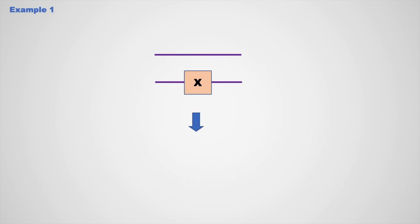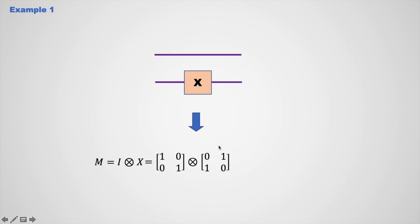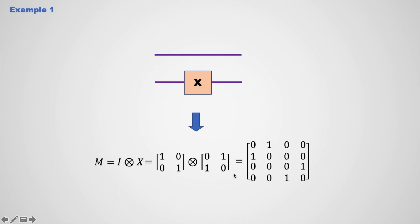Here you can see a quantum wire and, in parallel, an X-gate with a quantum wire. X-gate means NOT operation. So this logical circuit has a particular unitary matrix, and here I am explaining how you can construct this matrix from a logical circuit. Here, M equals to I tensor X — that is, the identity matrix tensor the NOT matrix X — and it equals to a 4 by 4 matrix, which is the equivalent unitary matrix of this logic circuit.